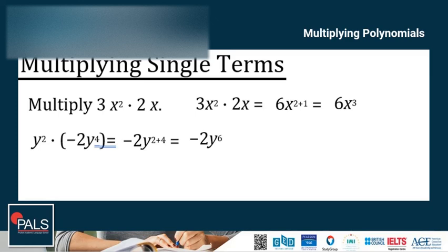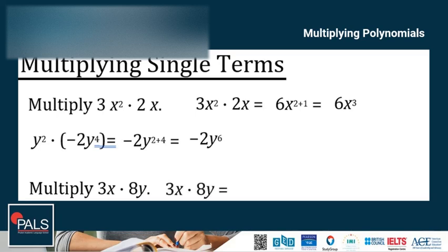The rules of exponents cannot be used if the bases are different. If the variables are different, only the coefficients are multiplied. So we can only multiply 3 and 8. Therefore, 3 times 8 gives 24xy as the final answer.